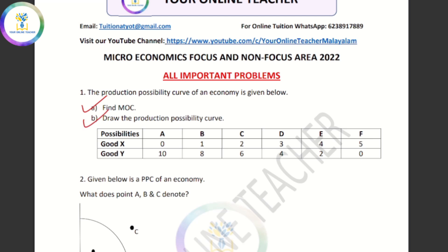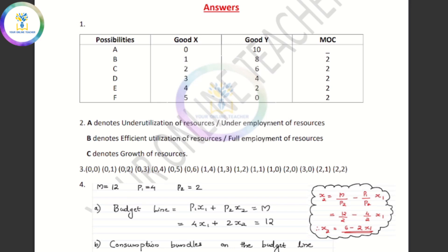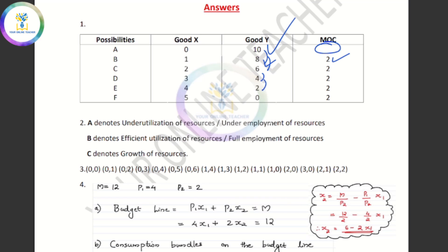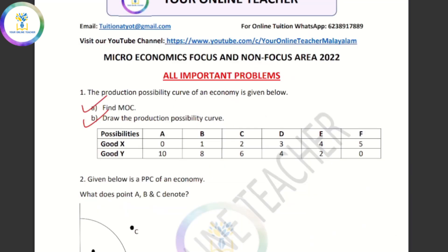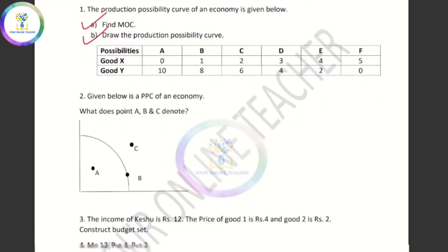We are going to talk about the production possibility curve. If you look at the curve, you will see good x values and y values: 0, 10, 18, 26, 34, 4, 25, 0 — and you will see a normal graph. Given below is the PPC of an economy.